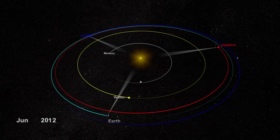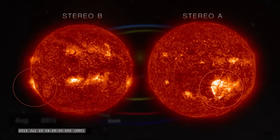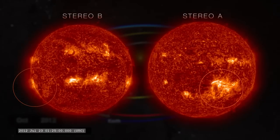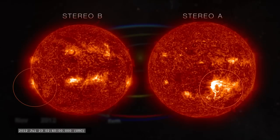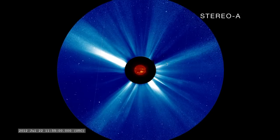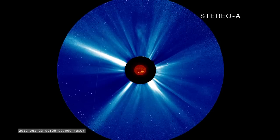NASA's twin STEREO spacecraft orbiting the Sun ahead and behind Earth gave a similar view from alternate perspectives. The STEREO satellites also carry coronagraphs, which block the bright solar disk to make the fainter extended solar atmosphere, or corona, visible.